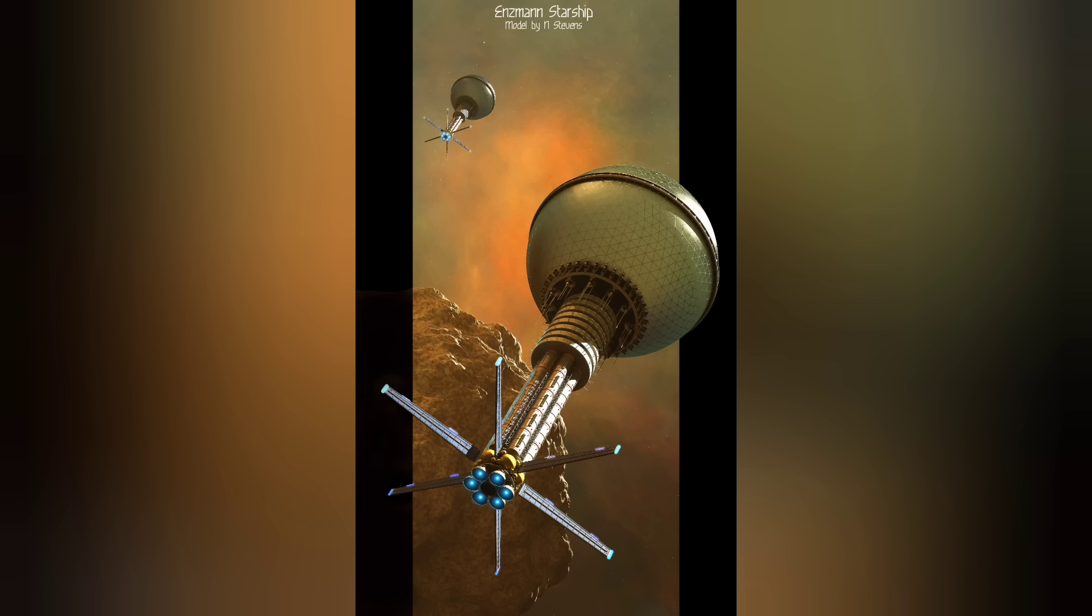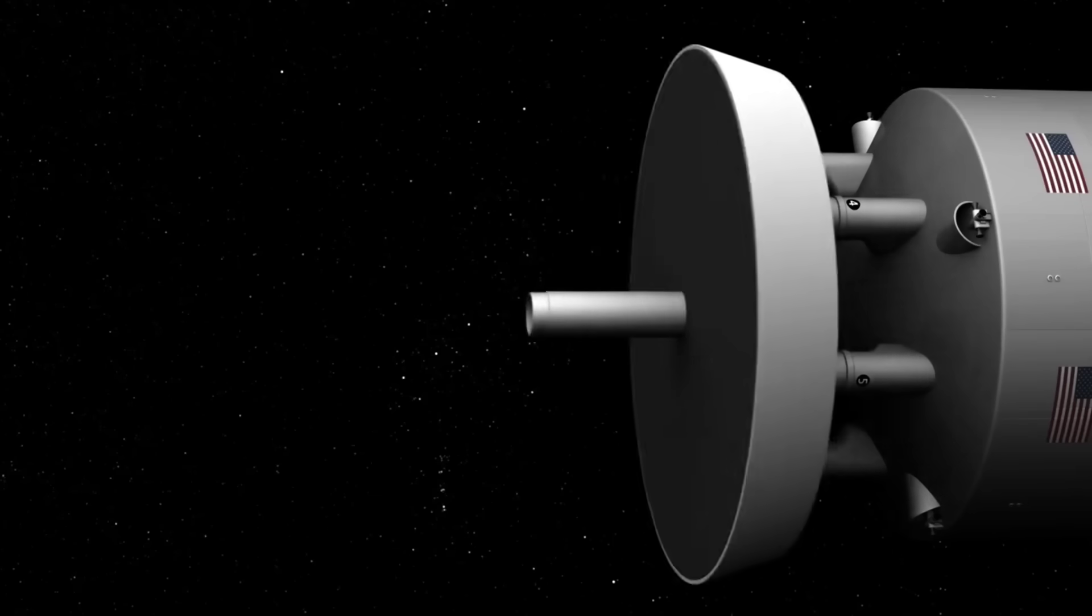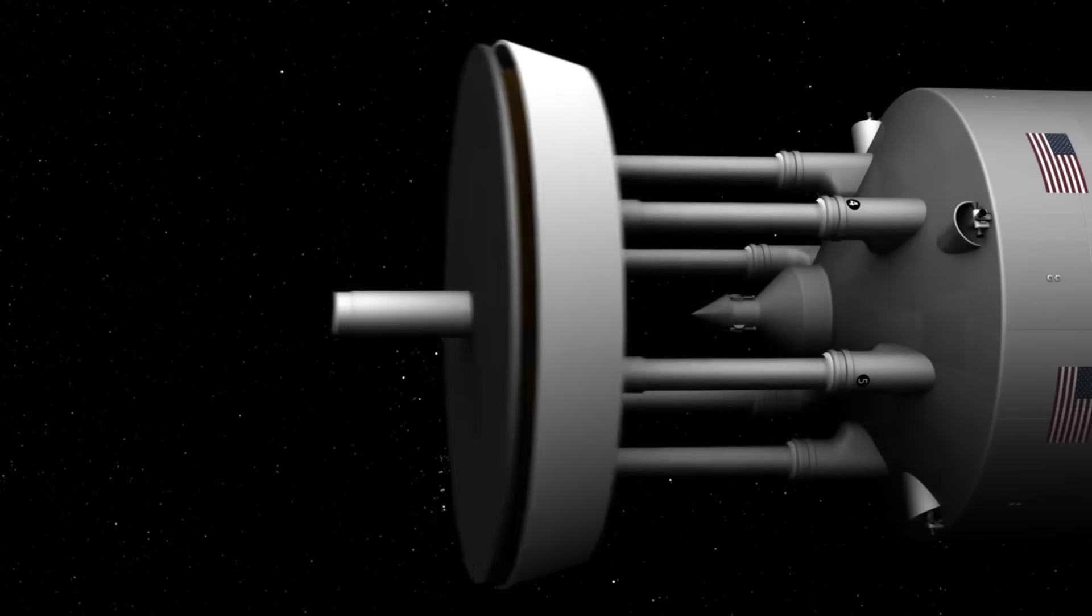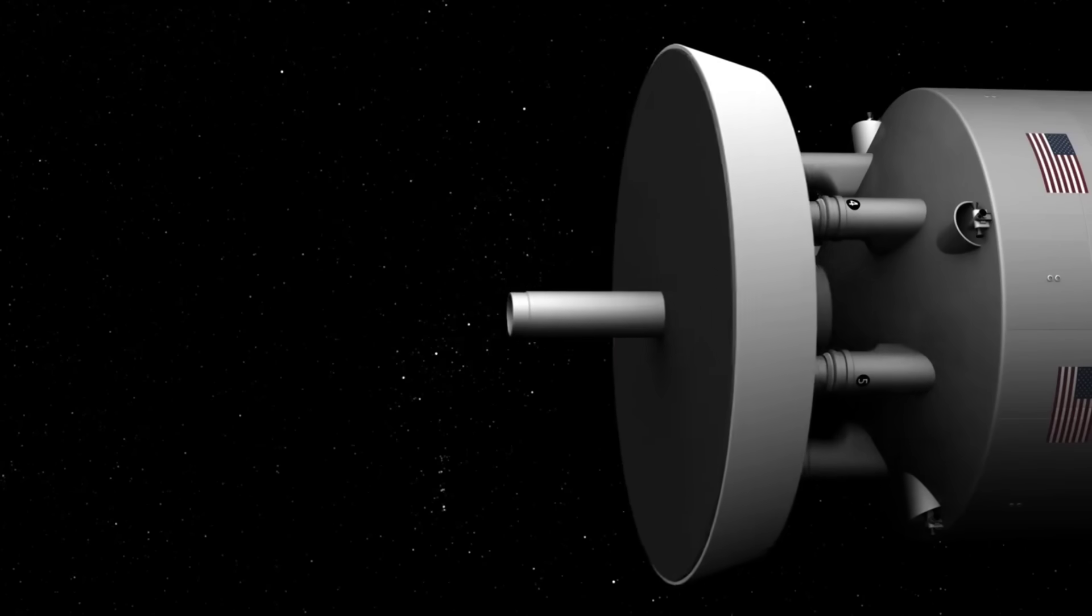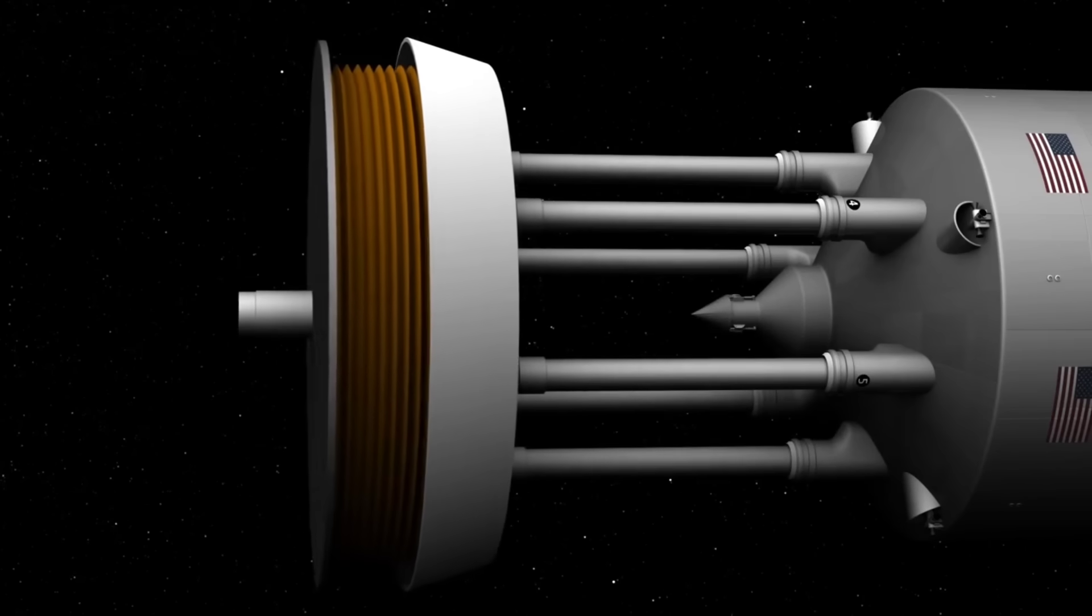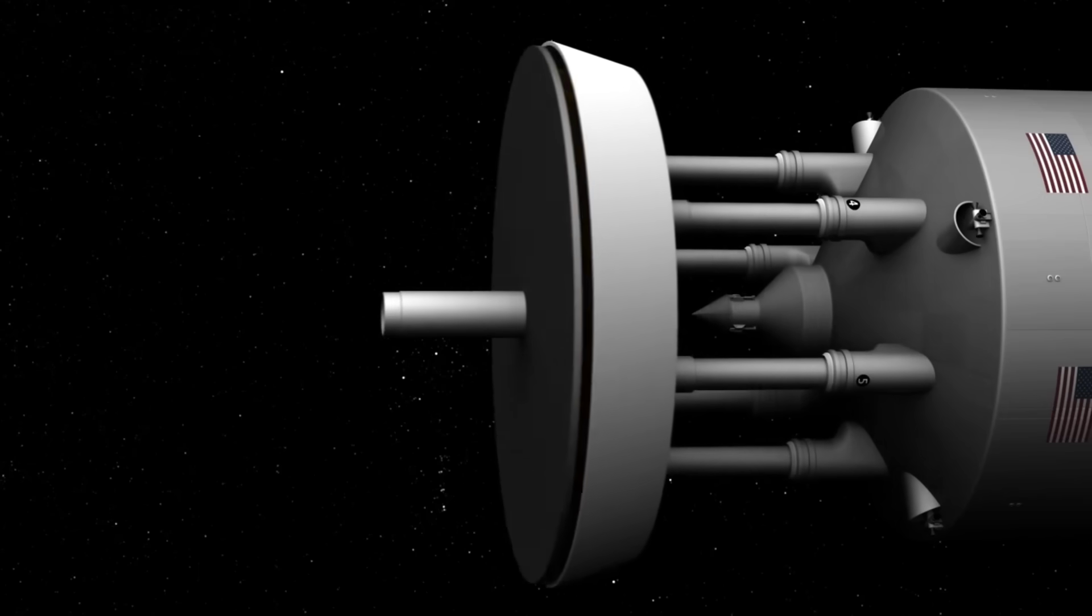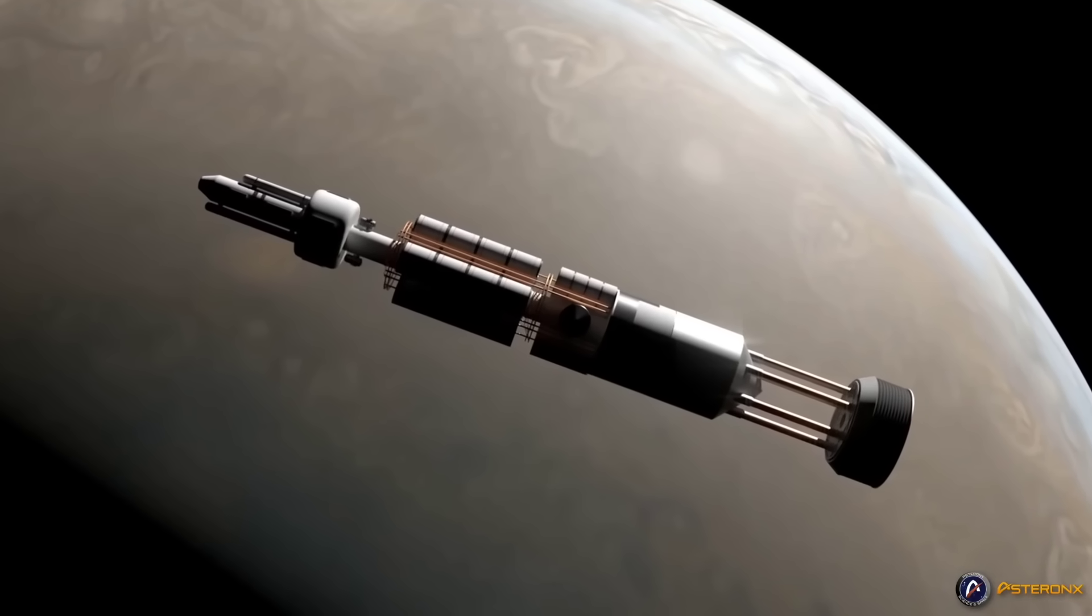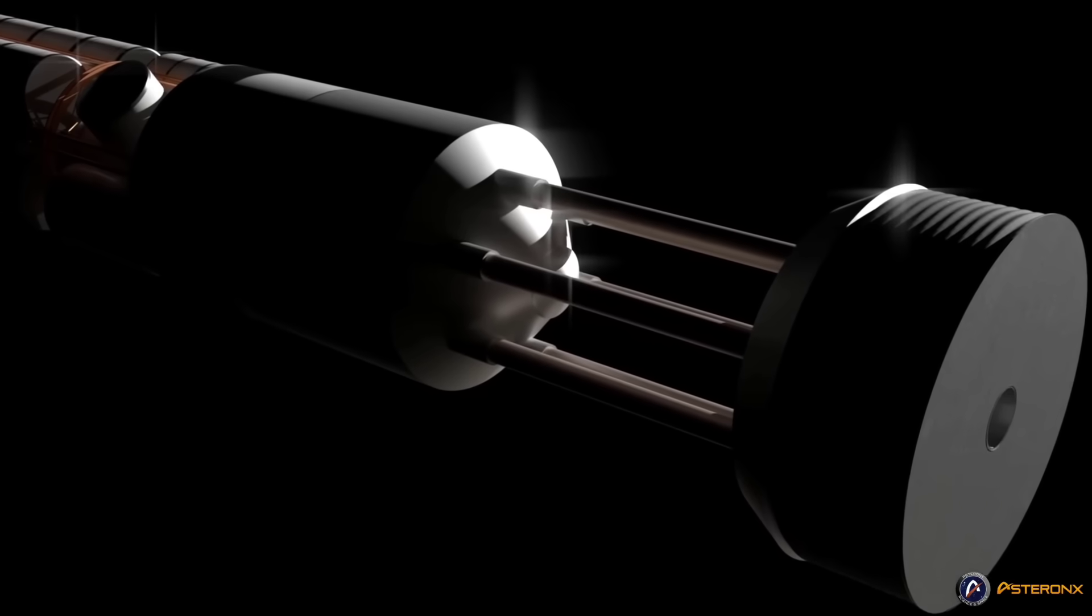His ideas about interstellar travel were astonishing. The Enzmann starship uses the rather insane principle of detonating nuclear weapons, very small nuclear weapons approximately 0.15 kilotons, behind a pressure plate that would have shock absorbers in order to reduce the amount of acceleration exerted on the spacecraft, trying to keep it down to say 1G for the benefit of the passengers. That being the case though, we're talking about one small thermonuclear blast every second or so in order to provide constant acceleration.